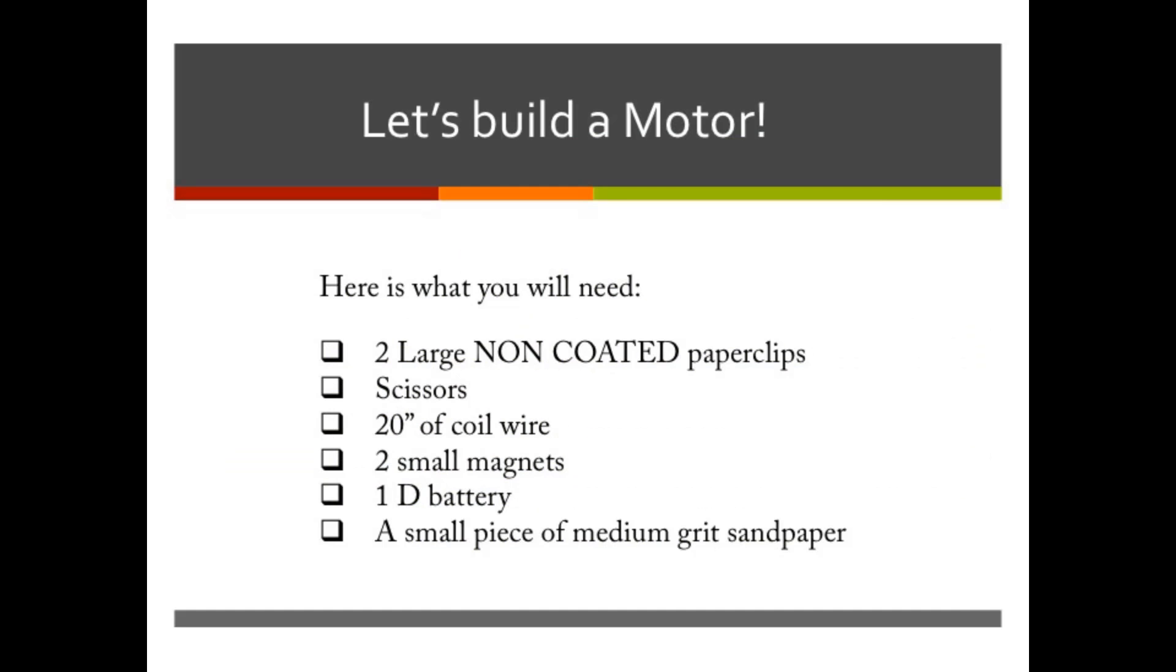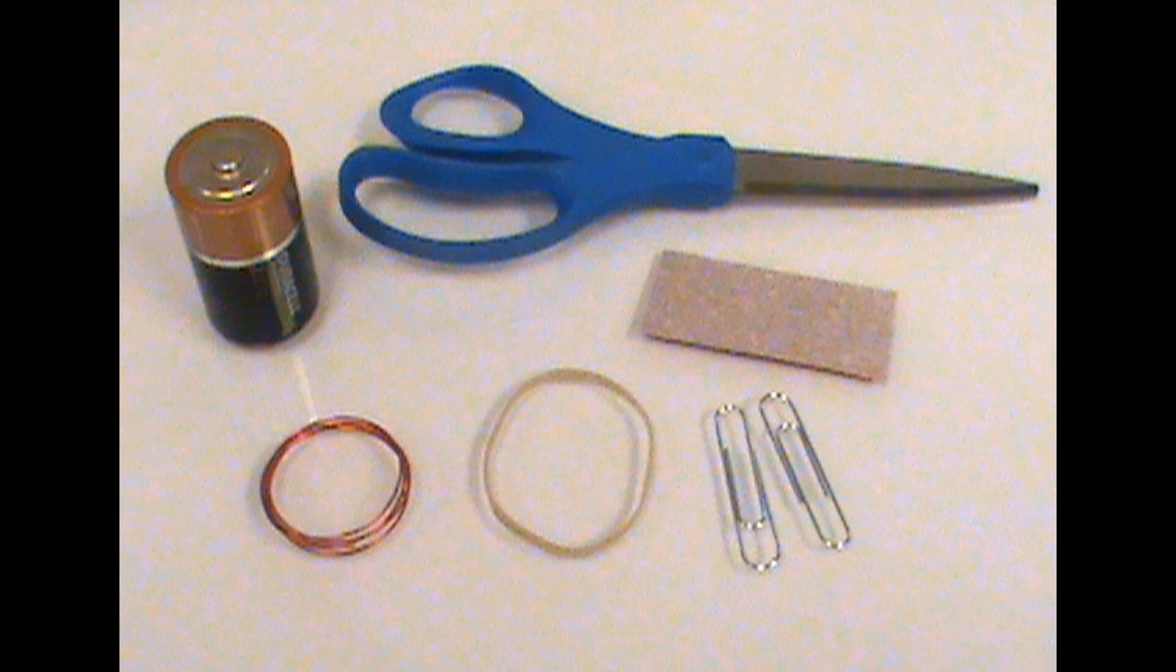Let's now explore how motors work by building one. Here's what you need: two large non-coated paper clips, scissors, about 20 inches of enamel coated magnetic coil wire, two small magnets, a D battery, and a small piece of medium grit sandpaper.